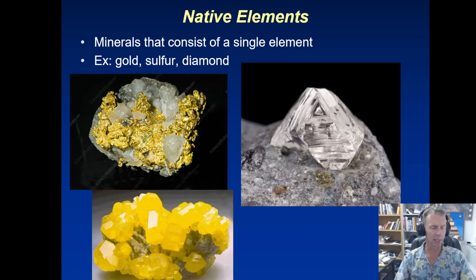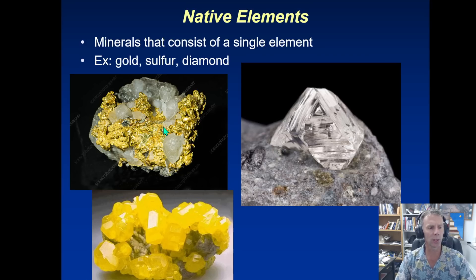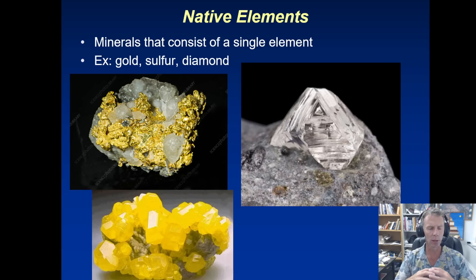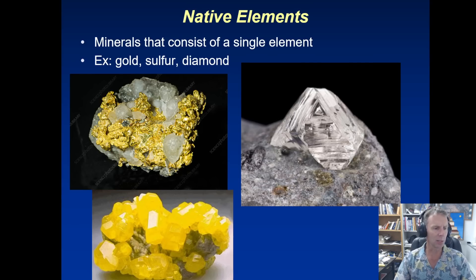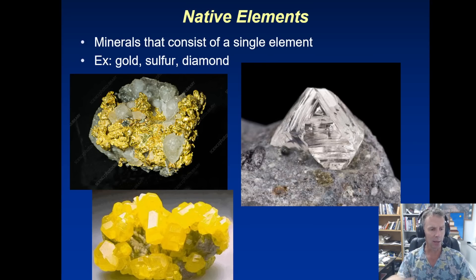Let's look at what a native element is. This would be a mineral — something that qualifies and matches the definition of a mineral — but we call it a native element because it consists of only one single element. For example, we have gold here, which was one of our quiz questions from Part 1. There's also diamond, which is made out of pure carbon — nothing more than pure carbon in a very high temperature, high pressure environment in which it crystallizes and forms the mineral we call diamond. And sulfur is also a native element. These elements exist in nature in solid forms, not combined with other elements, and they have all the other characteristics of a mineral, so they are considered minerals — but also called native elements.